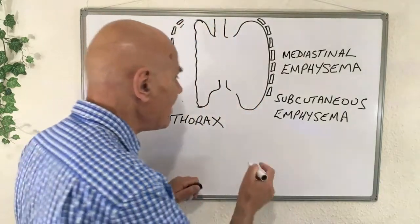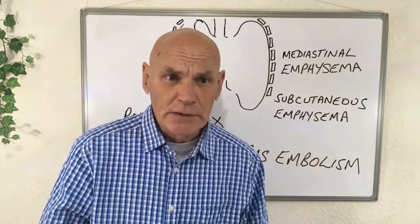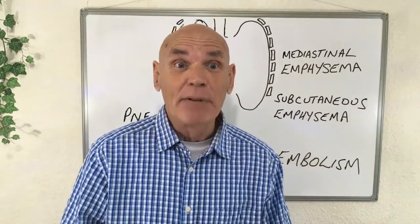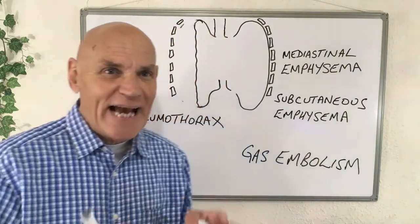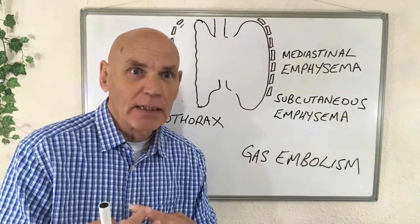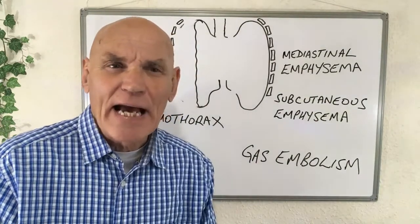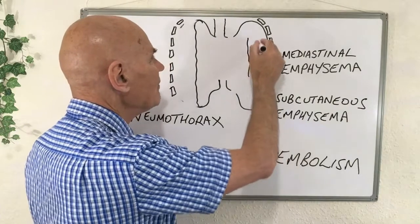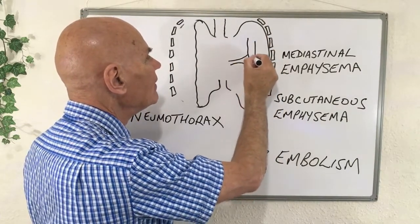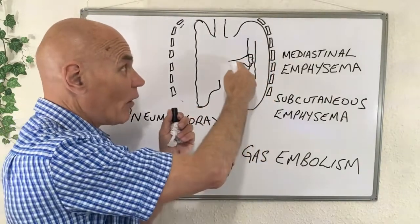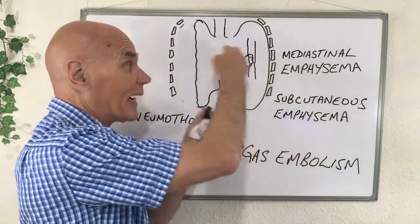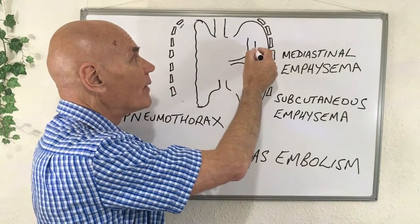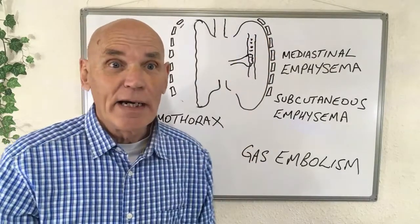The worst case scenario is a gas embolism. PADI questions often ask what is the most serious lung over-expansion injury, and the answer is always gas embolism. This is when gas — in this case air from a burst lung — gets into the bloodstream. That happens at the alveoli, where the exchange of oxygen and carbon dioxide occurs between the air sacs and the blood. A rupture there sends bubbles into the bloodstream.